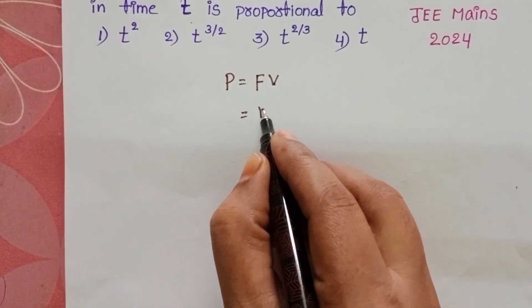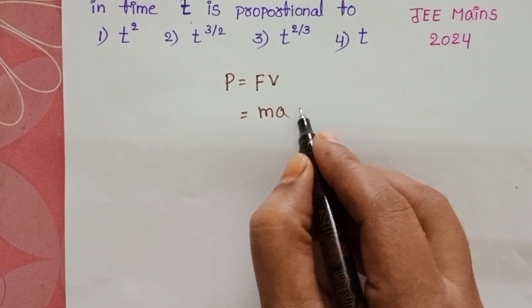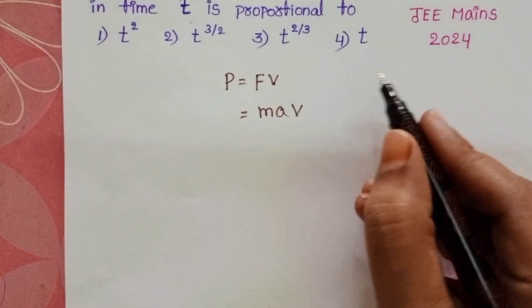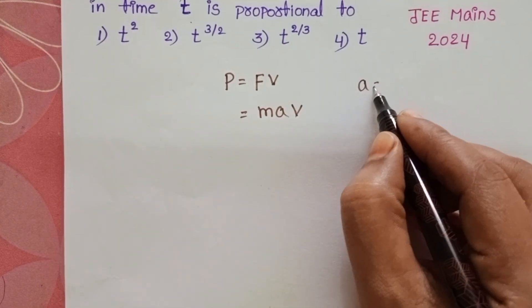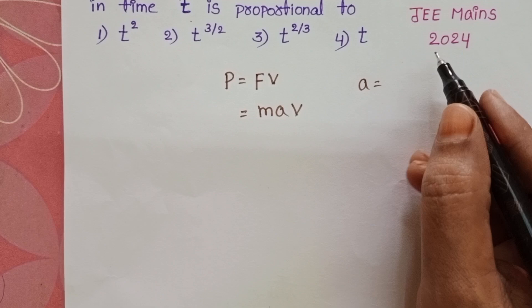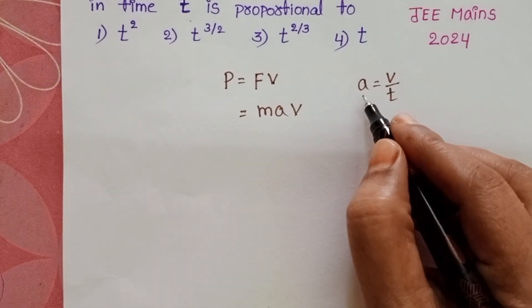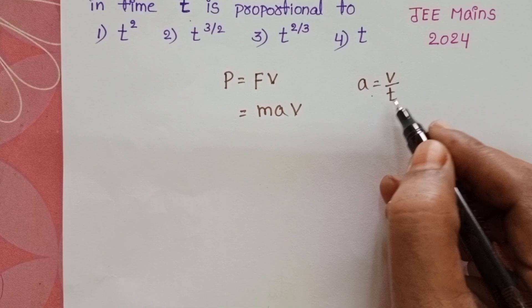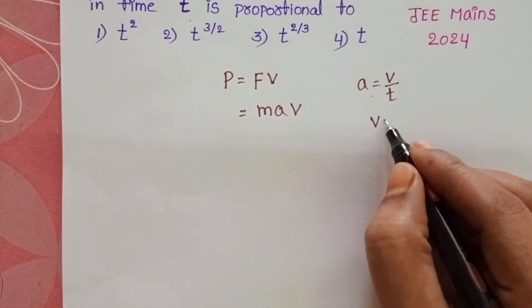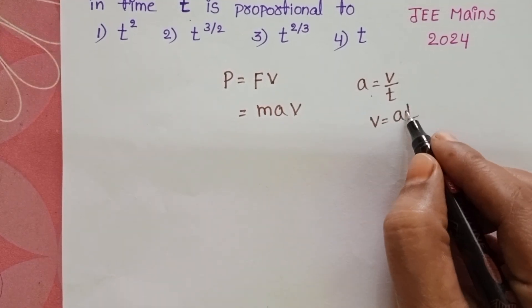Force equals mass into acceleration into velocity. We know acceleration equals rate of change of velocity. Initially, the body is at rest position, then acceleration equals velocity by time. Velocity equals acceleration into time.